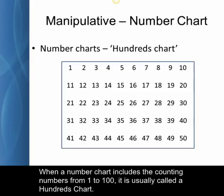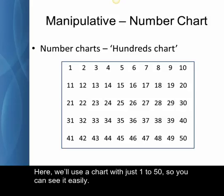When a number chart includes the counting numbers from 1 to 100, it's usually called a hundreds chart. Here we'll use a chart with just 1 to 50 so you can see it easily.